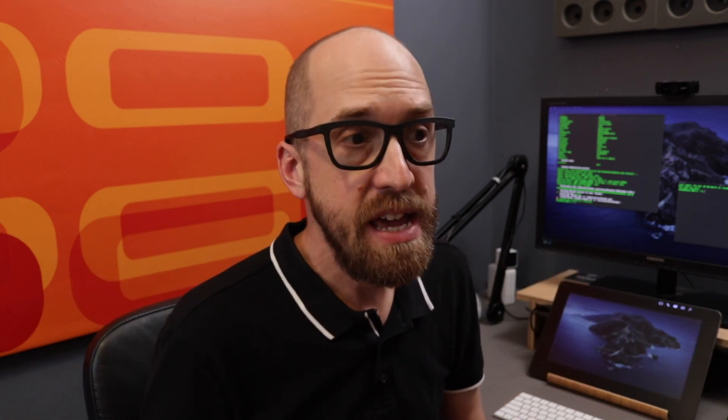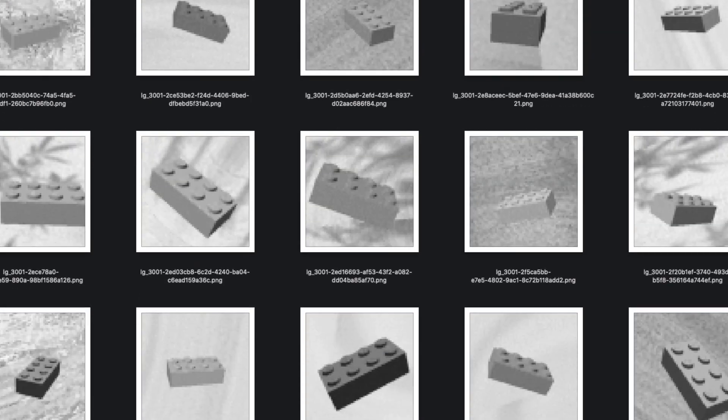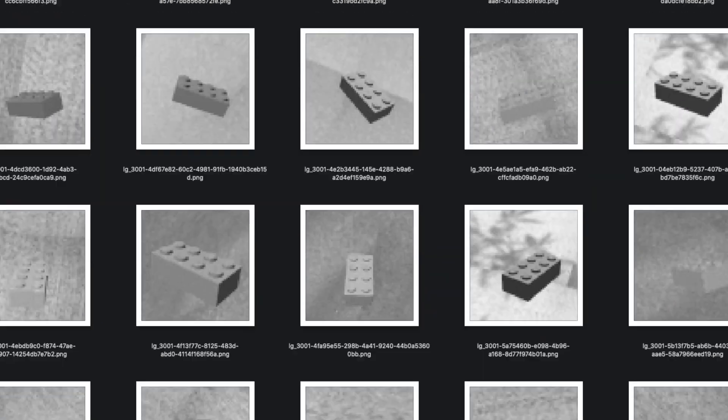I've automated the process and can create 200,000 images of Lego bricks with a fleet of EC2 instances running with compute-maximized cores. I didn't use GPU instances because the library I was using didn't make use of the GPU. I spun up 18 different EC2 instances as spot instances, so it cost me next to nothing — literally a couple of bucks to generate around 200,000 images of Lego bricks ready to train.